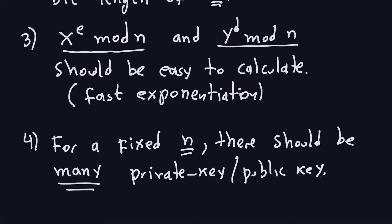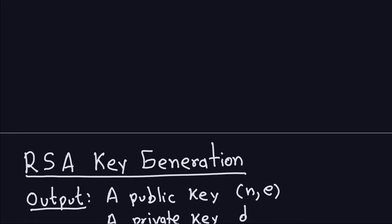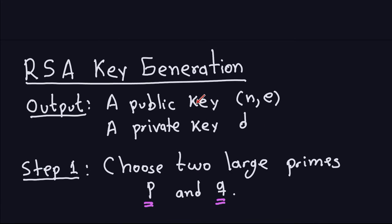Now let's look at how to compute E, N, and D. N and E are the public key, and D is the private key. This is the RSA key generation — we compute the public key and private key. This is the most important part of RSA. Let's look at this as a sequence of steps to follow.